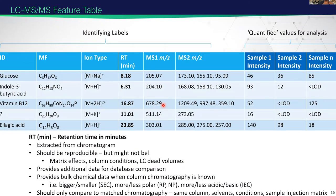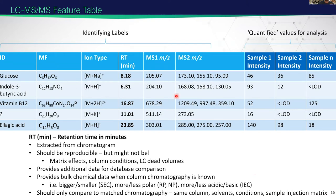Retention time in and of itself doesn't tell you a huge amount about the molecule unless you understand the chromatography. For example, if you've used a size exclusion column, you might infer if a molecule is bigger or larger depending on when it elutes. Likewise, reverse phase or normal phase separation lets you infer polarity. You can only compare retention times to other separations that use the same column, solvents, conditions, sample injection matrix, and column temperature — and even then, retention times can drift between measurements.